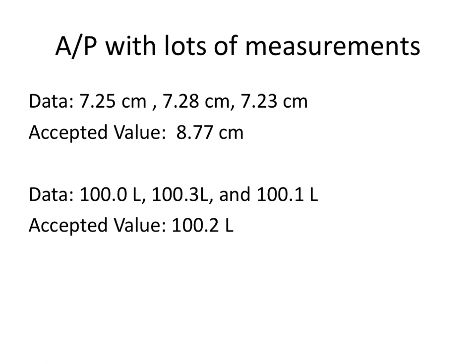If we look at this first data set, we have measurement one, measurement two, measurement three — and they are all different by only a few hundredths of a centimeter. So we would say that the data is very precise because each measurement is close to one another. Now the accepted value — the correct value — is 8.77 centimeters. Comparing that to the data collected, we can see there's a pretty large difference, approximately 17 to 20 percent. So although this data is precise, it is not very accurate because those numbers are not close to the accepted value.